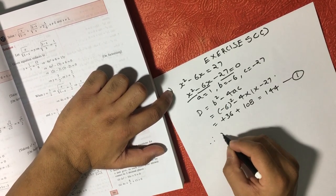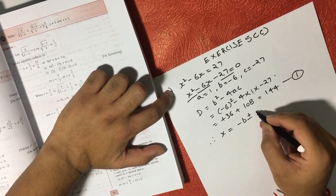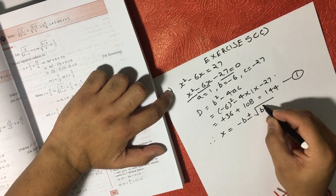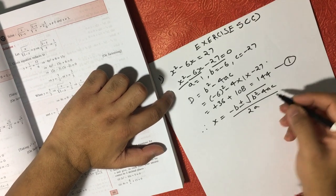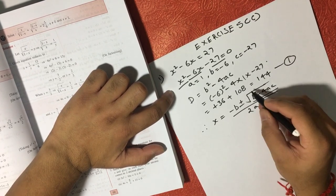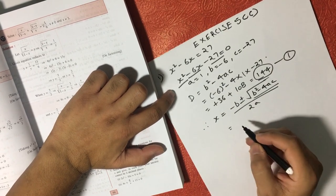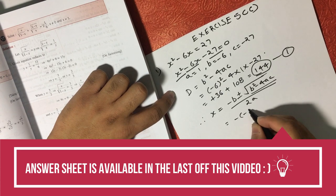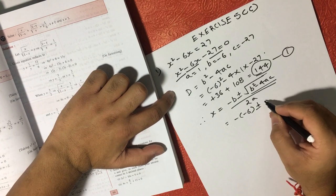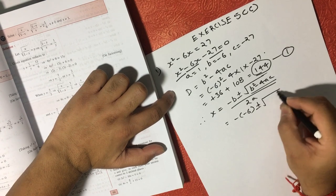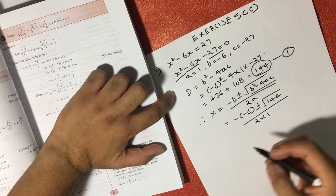Now we have another formula: x is equal to minus b plus minus square root of b square minus 4ac over 2A. From equation number 1, we know b square minus 4ac is 144. So minus b is minus negative 6, plus minus square root of 144, over 2 into 1. A is 1 here.